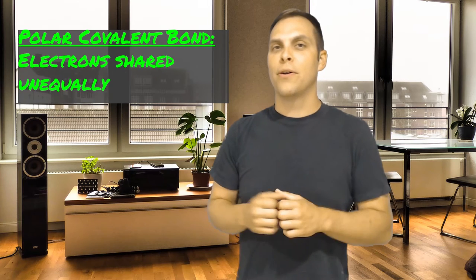Now covalent bonds are the strongest form of bonds. And they're what happens when atoms share their electrons. But sometimes, atoms don't like to share their electrons evenly. And this is what's called a polar covalent bond.